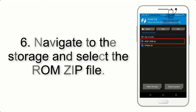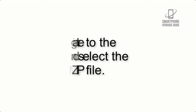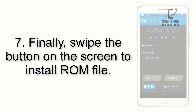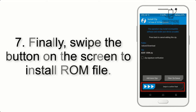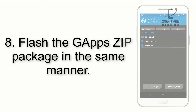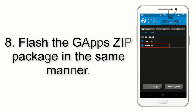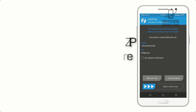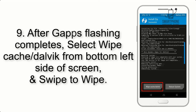Step 5: Go back to the recovery main screen and tap on the Install button. Step 6: Navigate to the storage and select the ROM zip file. Step 7: Finally, swipe the button on the screen to install the ROM file.